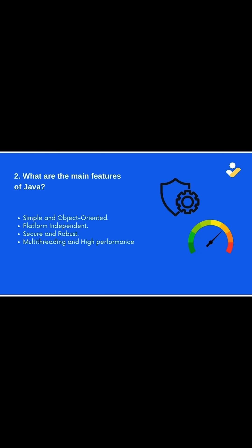Second, what are the main features of Java? Here are some key features that make Java powerful and reliable. First, simple and object-oriented — in Java, everything revolves around classes and objects. Second, platform independent — Java runs on any system through bytecode and the JVM. Third, secure and robust — there is no use of pointers and automatic memory management, which makes it secure, and there is built-in exception handling and garbage collection.